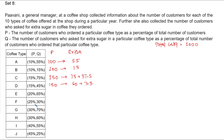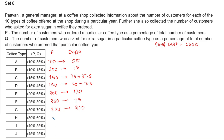Coffee type E: 20 percent of 1000 is 200, and 65 percent of 200 — 1 percent is 2, so 65 percent is 130. Similarly, coffee type F: 25 percent of 1000 is 250, and 30 percent of 250 is 75. Coffee type G: 30 percent of 1000 is 300, and 70 percent of 300 is 210. Coffee type H: 30 percent of 1000 is 300, and 60 percent of 300 is 180.